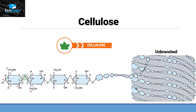Cellulose, unlike starch and glycogen, is not a stored form of energy. Rather, it helps in making the structure of plants. Cellulose is unbranched and made up of beta glucose subunits. The glycosidic bond is made in an upward direction, which is how we recognize it is made up of beta glucose subunits.